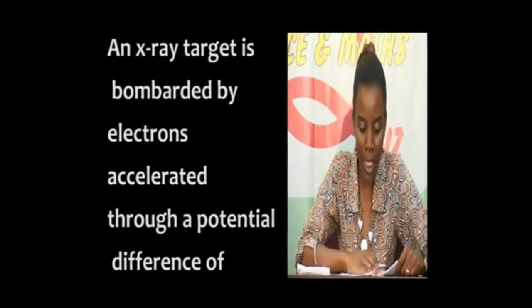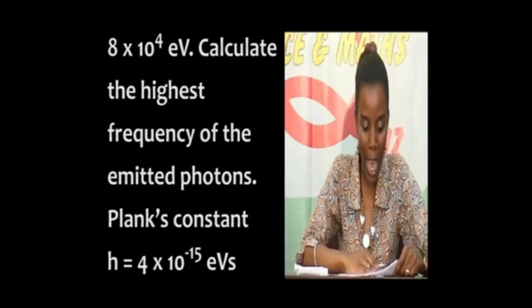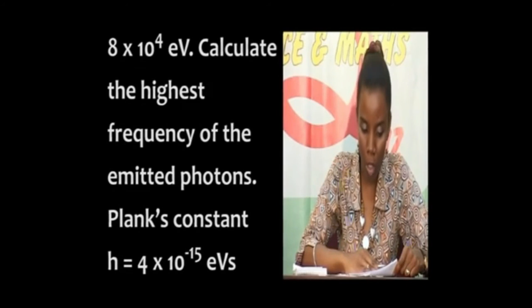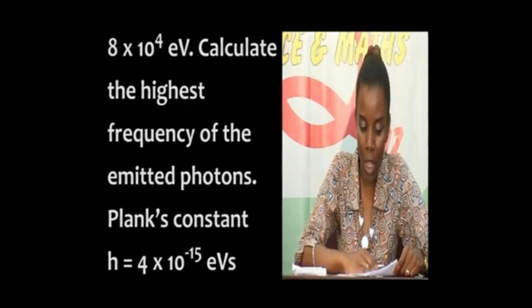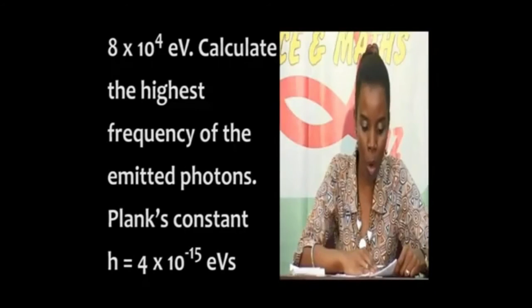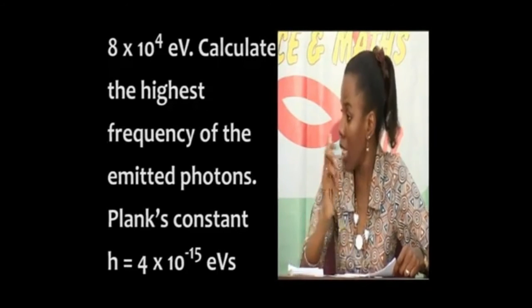An X-ray target is bombarded by electrons accelerated through a potential difference of 8 times 10 to the power 4 electron volts. Calculate the highest frequency of the emitted photons. Planck's constant H is equal to 4 times 10 to the negative 15 electron volt seconds. Yes, Victor. 2.0 times 10 to the power 19 hertz. That's right.